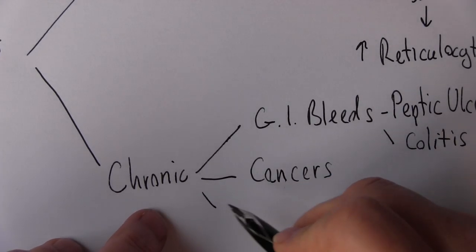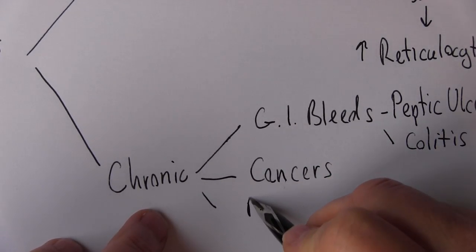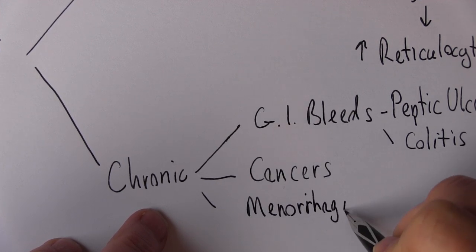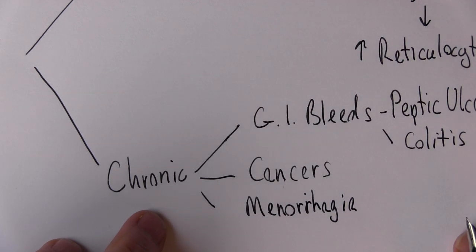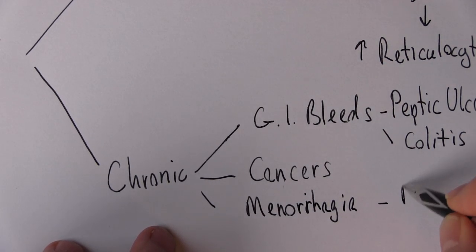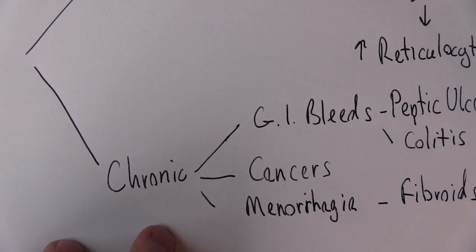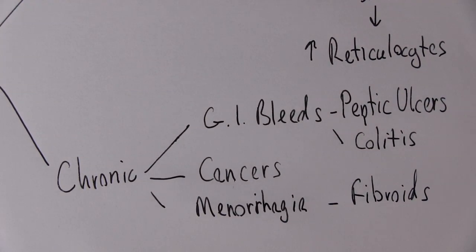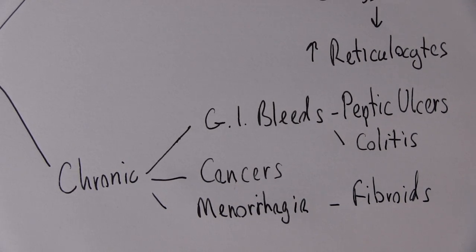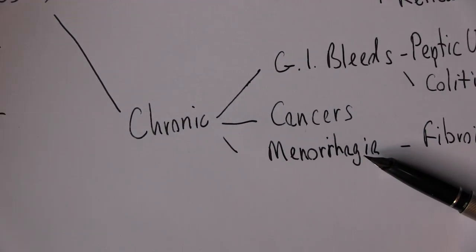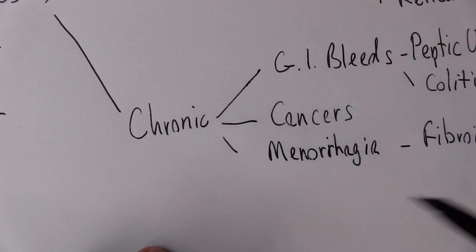Another common problem is menorrhagia, excessive blood loss through menstruation. For example, just simple fibroids, these benign tumors of the uterus, the endometrium. A lot of blood loss can be lost through menstruation. I mean menstruation loses blood anyway, but pathological menstruation can lead to a lot of chronic blood loss.